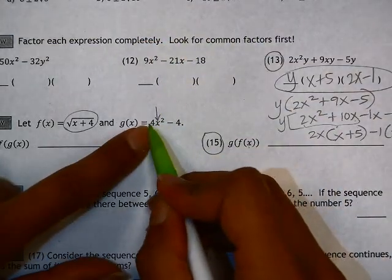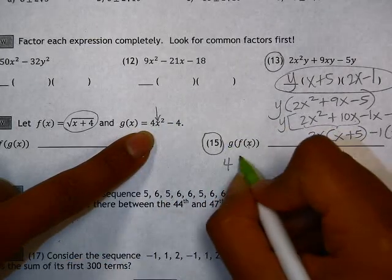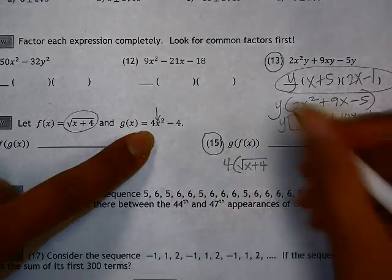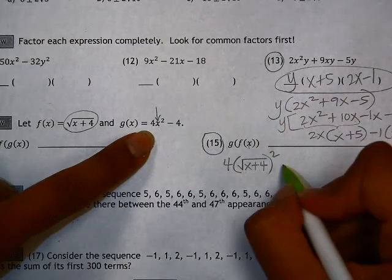Which means instead of 4x squared minus 4, if I rewrite function g and substitute function f in place of the x, that's 4 times the quantity square root of x plus 4 squared, instead of x squared, and then minus 4.